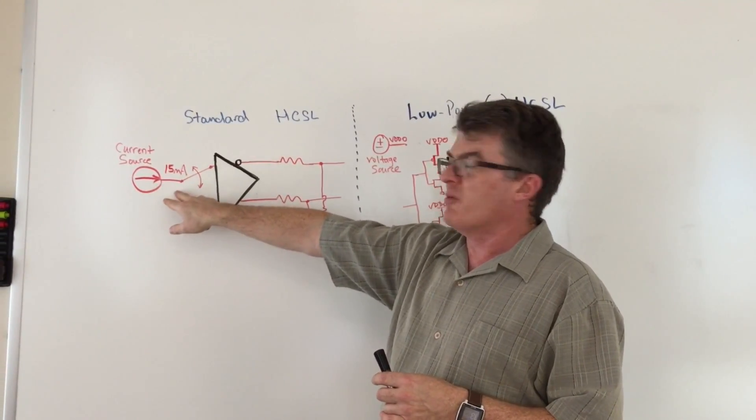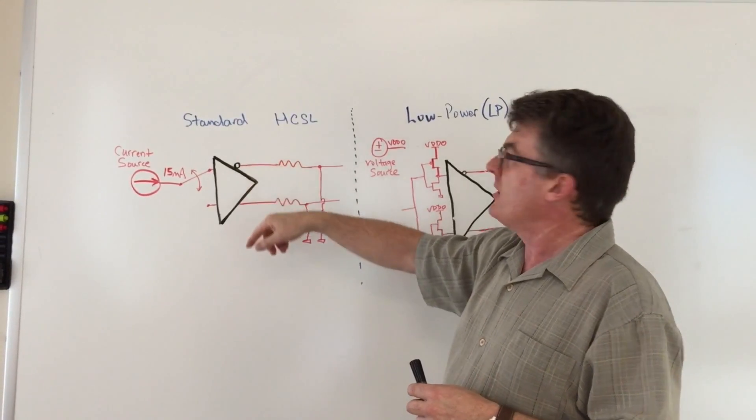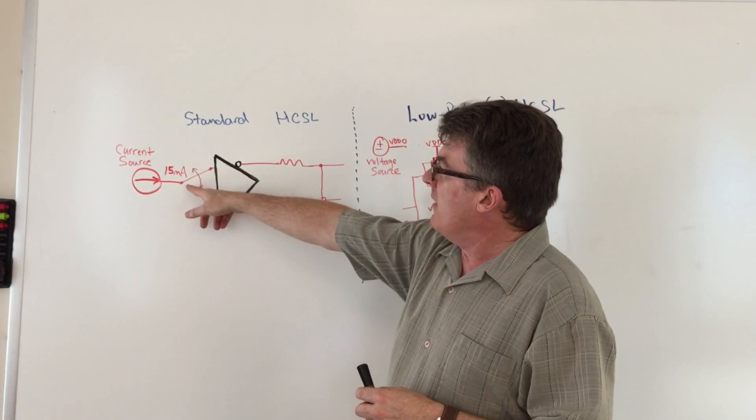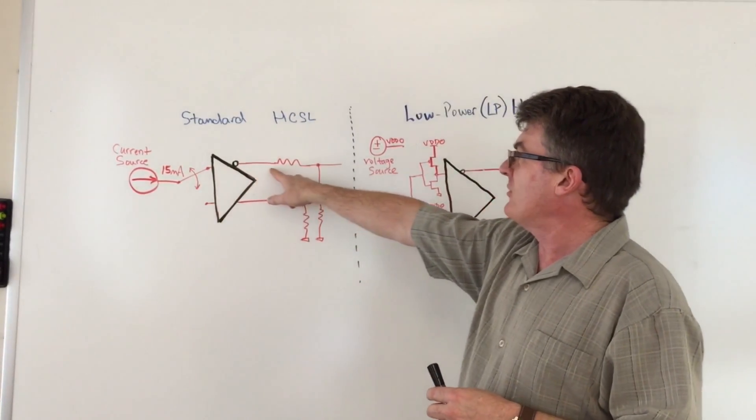We have a current source providing 15 milliamps, and we steer the current between the true and complement outputs. You can see here the current is being steered to the complement output, so this 15 milliamps goes out this resistor